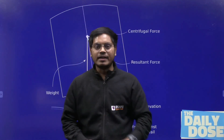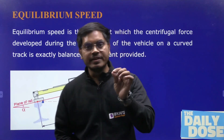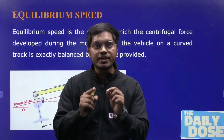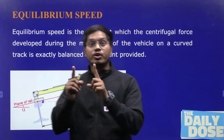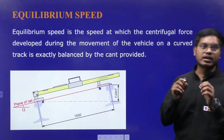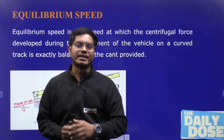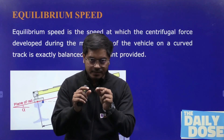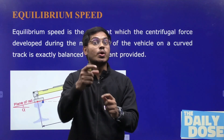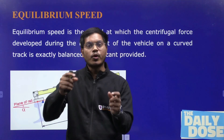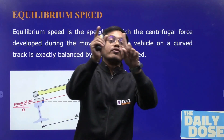The question is what actually is theoretical cant and actual cant. But before that, I would like to tell you about equilibrium speed. Equilibrium speed is the speed at which the centrifugal force developed during the movement of the vehicle on a curved track is exactly balanced by the cant provided.